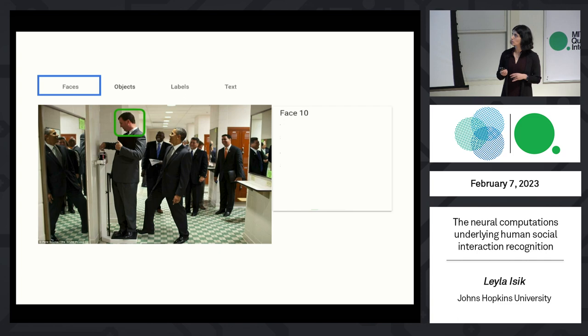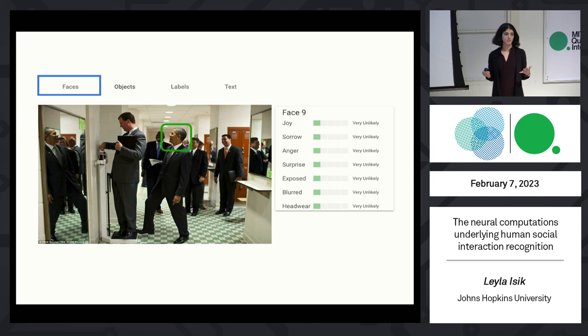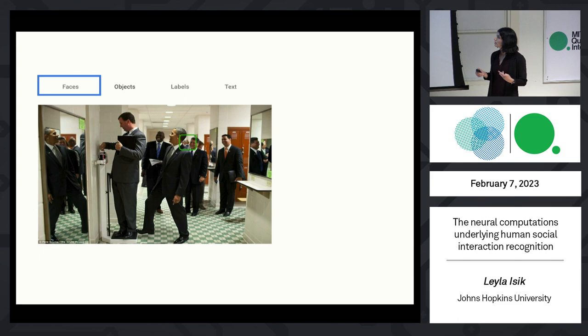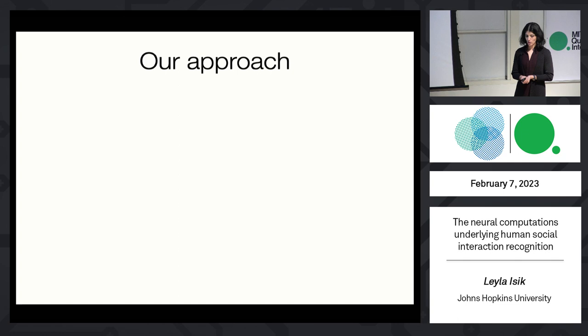Google's attempt at social understanding is to try to recognize faces and classify their emotional expression — and it does a pretty amazing job at recognizing every single face. You can zoom in face-by-face and get emotion predictions. But for face number 10 it rates joy, sorrow, anger, and surprise as all equally very unlikely. The same for Obama's face. In fact, the only confident classification the system makes is that one face in the back is very likely blurred. This highlights the huge gap between our progress in visual object recognition and humans' rich visual social abilities.